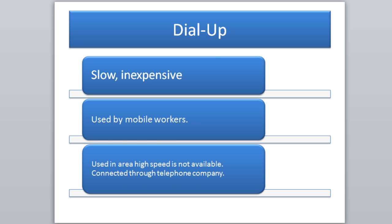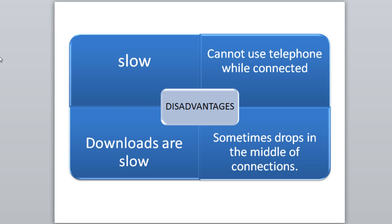The disadvantages of dial-up: it's very slow and you cannot use the telephone while connected. If you've ever used dial-up, you might remember your mom trying to use the phone while you were on the internet — she'd say get off the internet, I'm trying to make a phone call. That's because dial-up takes up the entire phone bandwidth, versus DSL which separates the connection.